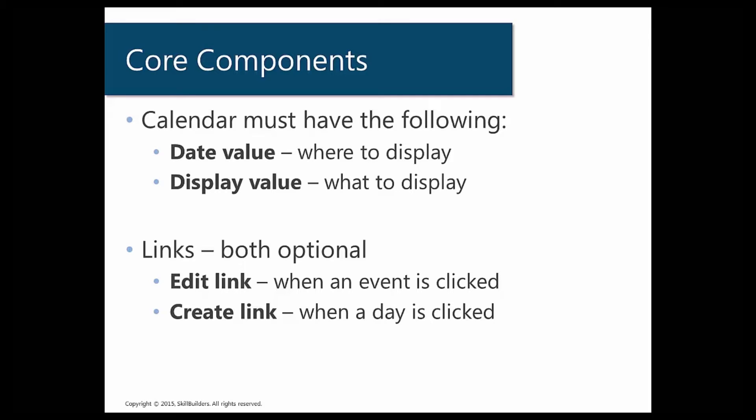Another optional component, but something that provides an immense amount of use for a calendar, are links. You can have an edit link and a create link — both very powerful. The edit link allows you to click on an event and control what happens when a particular event is clicked. The create link is what happens when you click on an empty day. If January 1st has nothing on it and you click that day, the create link fires. If there is an event on that day and you click it, the edit link fires.